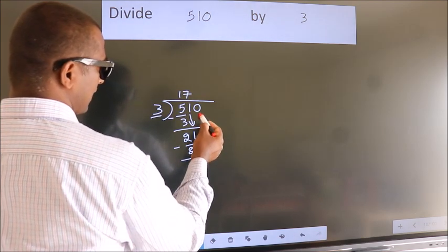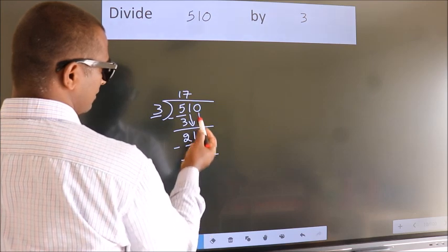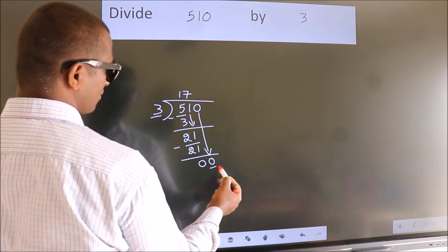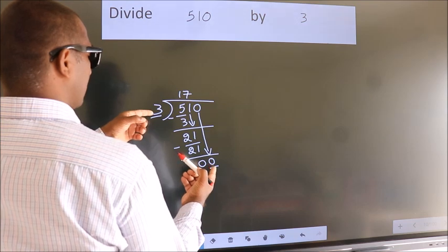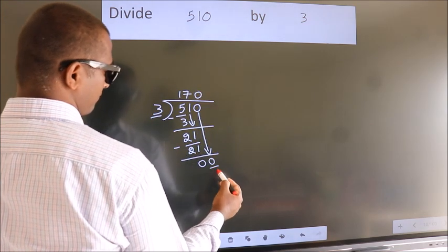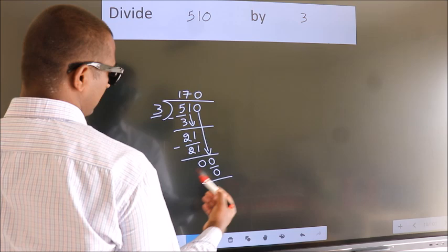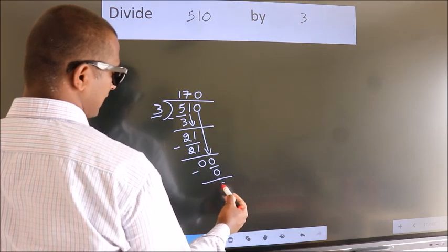After this, bring down the beside number. So 0 down. So 0. When do we get 0? In 3 table. 3 times 0, 0. Now we subtract. We get 0.